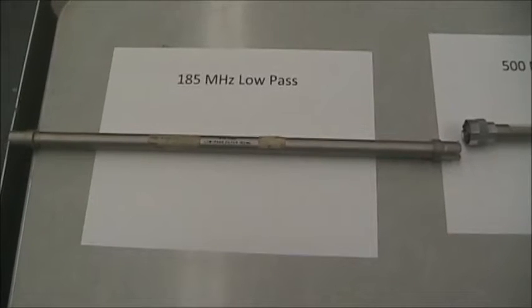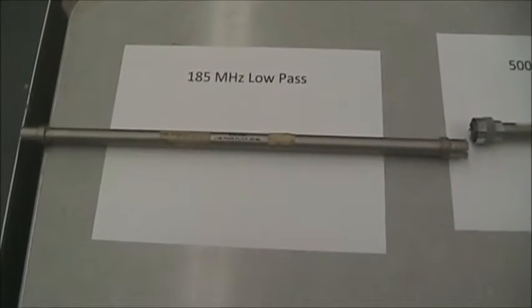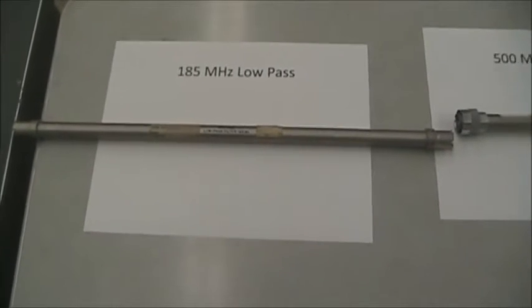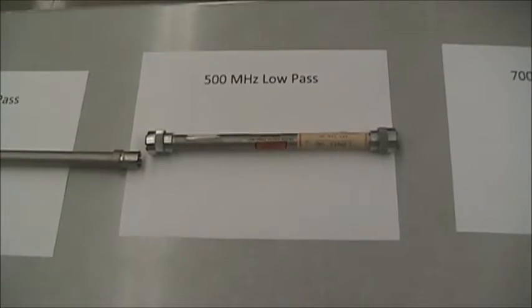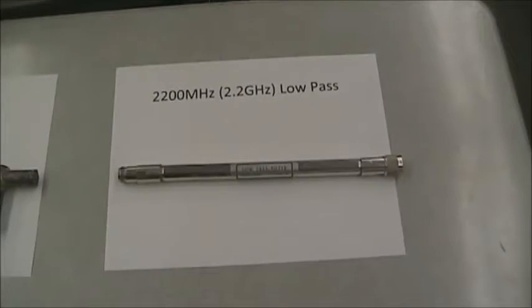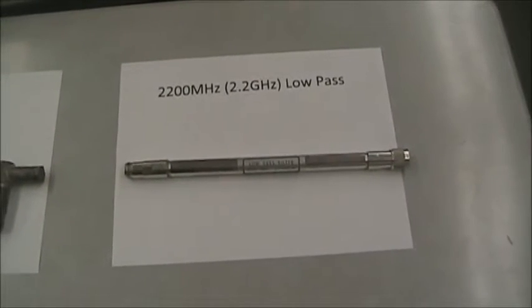The types of filters we will be viewing will be similar to these: a 185 megahertz low pass filter, a 500 megahertz low pass filter, a 700 megahertz low pass filter, and a 2.2 gigahertz low pass filter.